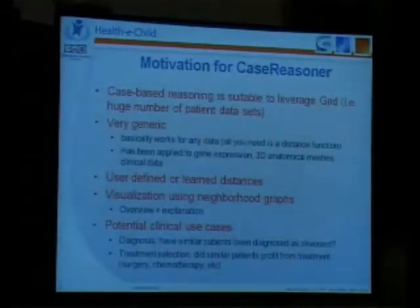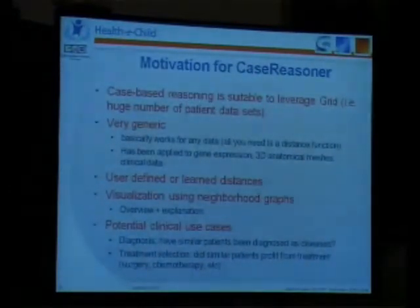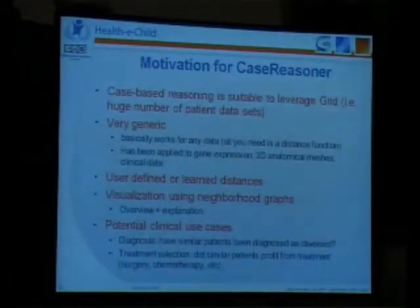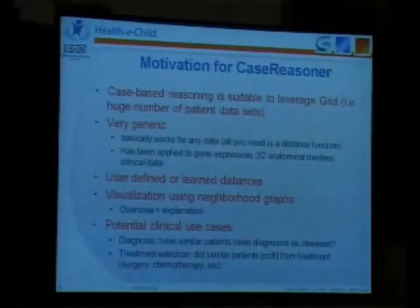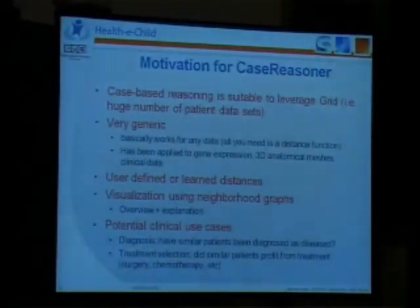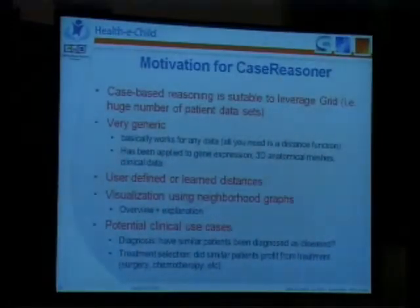We can visualize this in graphs, as you have seen before. There are two main clinical use cases for such a system. One is support in diagnosis — have similar patients been diagnosed as diseased or healthy, and which subtype of a disease? And the other is treatment selection — did similar patients profit from a treatment, such as surgery or chemotherapy?